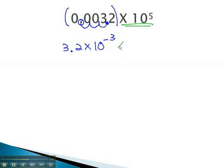The times 10 to the 5th at the end is still there. We haven't touched it yet. We can combine our tens together by using that exponent property where we add the exponents. This will give us 3.2 times 10 to the negative 3 plus 5, or second power.